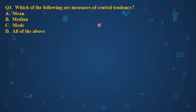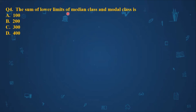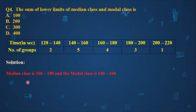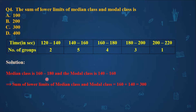MCQ three asks which of the following are measures of central tendency — this is a very easy question. Mean, median, and mode are all known as measures of central tendency, so the correct option is option D. MCQ four asks for the sum of the lower limits of the median class and the modal class. The median class is 160 to 180 with lower limit 160, and the modal class is 140 to 160 with lower limit 140. So 160 + 140 = 300, and the correct option is option C.